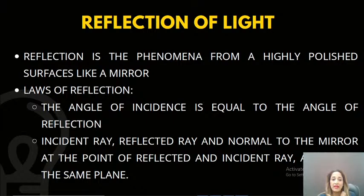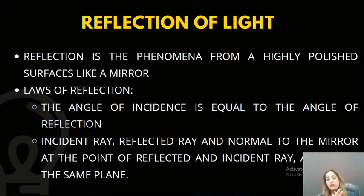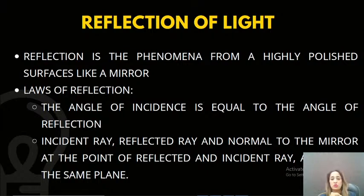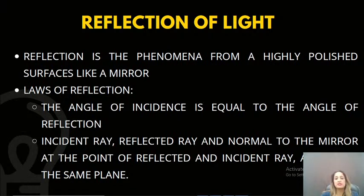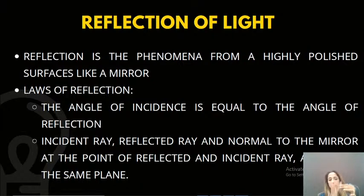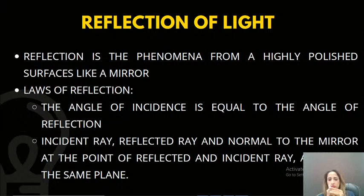Now let's understand reflection, because knowing reflection is essential before we talk about image formation by mirrors. Translucent objects are not completely transparent — like rice paper or oiled paper — where only a little light passes through. Opaque objects allow no passage of light. Reflection occurs from highly polished surfaces like a mirror.